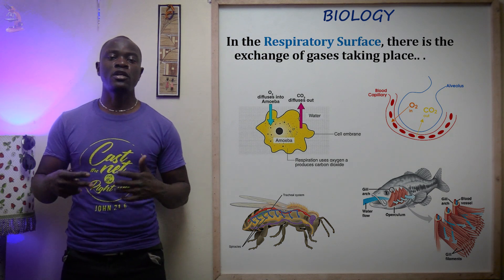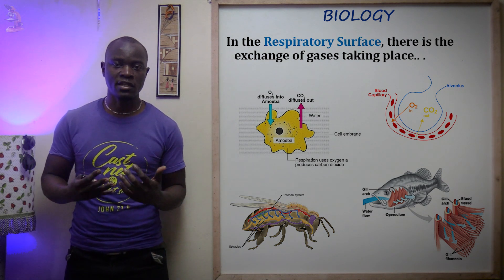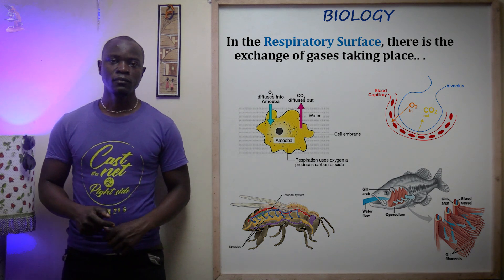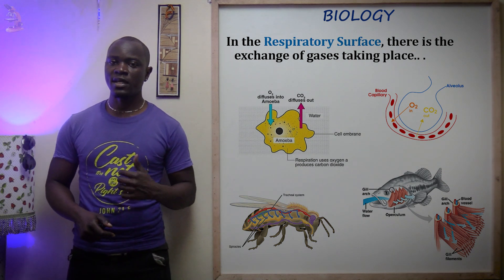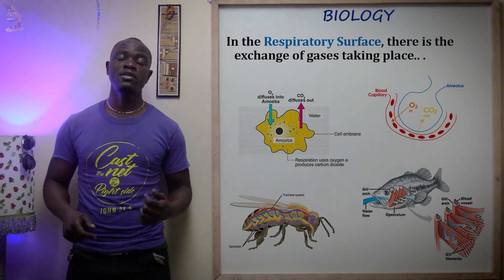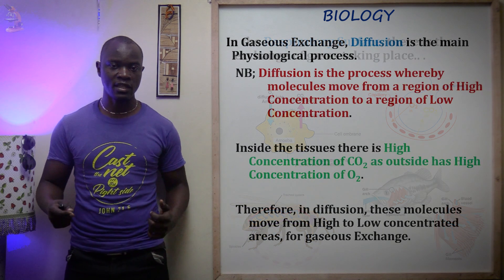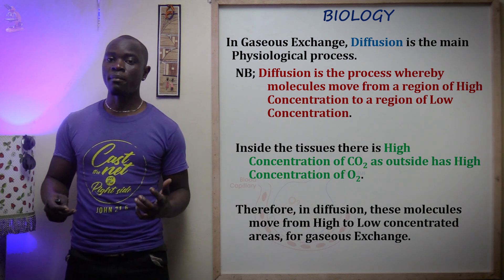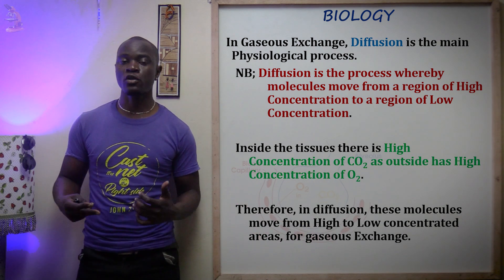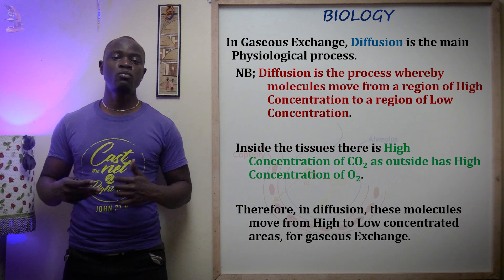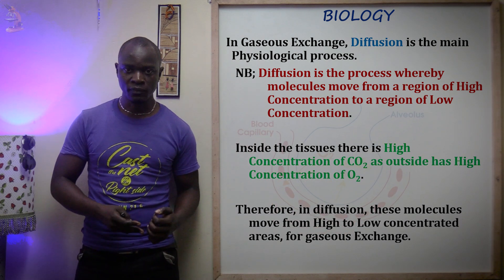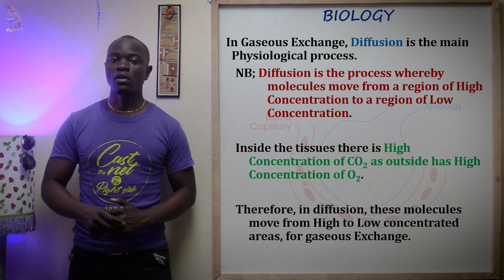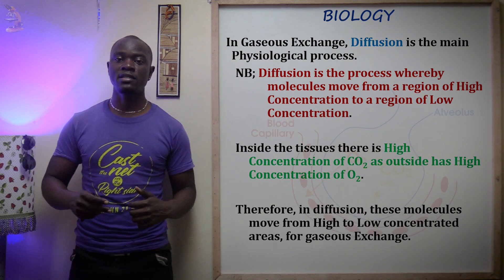So the respiratory surface is where the exchange of oxygen and carbon dioxide takes place. For this gas exchange process to occur, remember we said the main physiological process is diffusion. Diffusion is the process whereby molecules move from a region of high concentration to a region of low concentration.